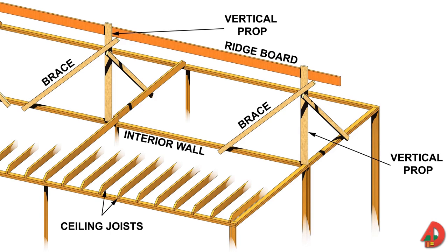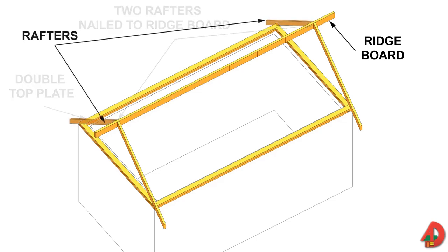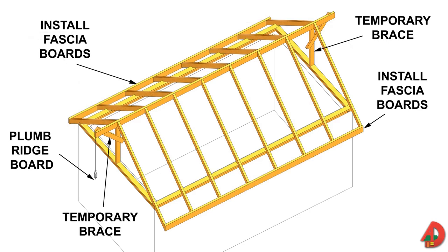When only a few carpenters are at the job site, the most convenient procedure is to set up the ridge board at the required height and hold it in place with temporary braces and props, then nail the rafters to the ridge board and the top of the wall plates. A faster method with a larger crew: lay the ridge board flat on ceiling joists; nail the top of two rafters near each end of the ridge board; raise the ridge board and two rafters into position; nail seat ends to the double top plate; nail two rafters on opposite sides of the ridge board; plumb the ridge board at the gable end with a temporary brace; then position and nail the remainder of rafters and install the fascia board.